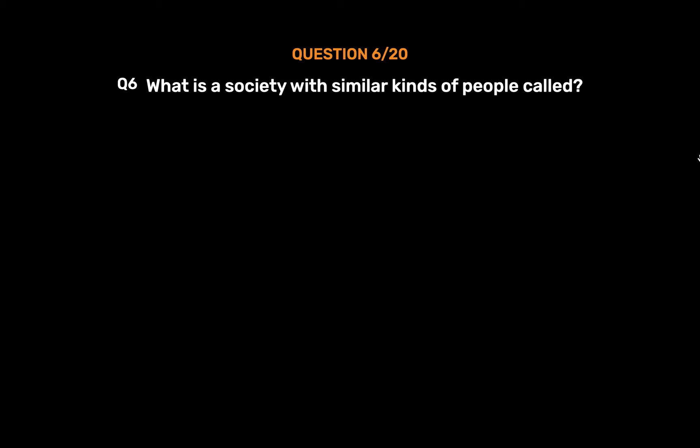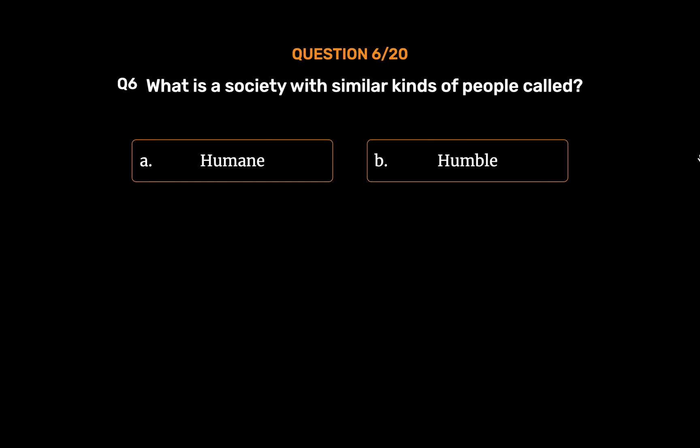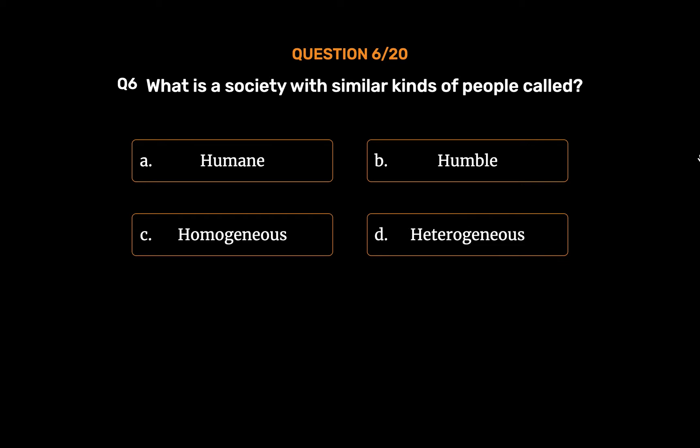Question number 6. What is a society with similar kinds of people called? Option A: Humane. Option B: Humble. Option C: Homogeneous. Option D: Heterogeneous.